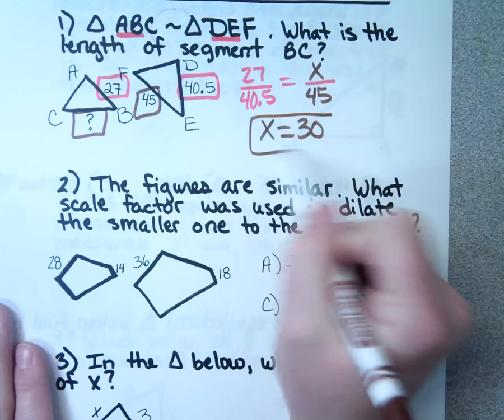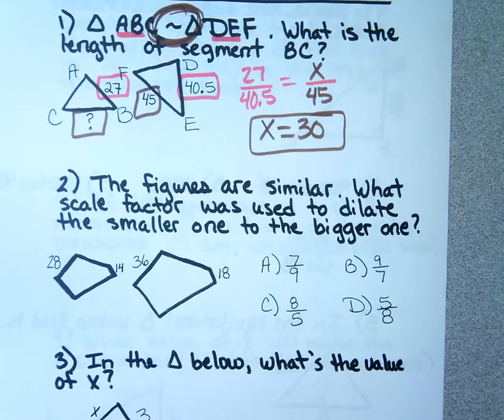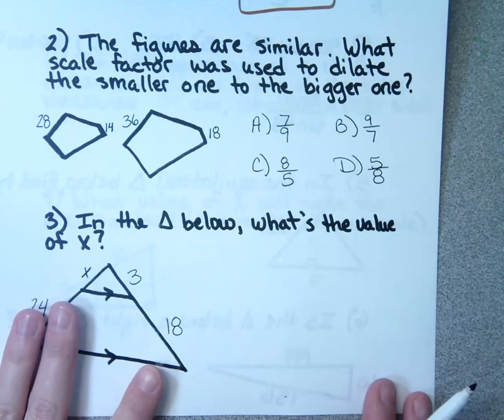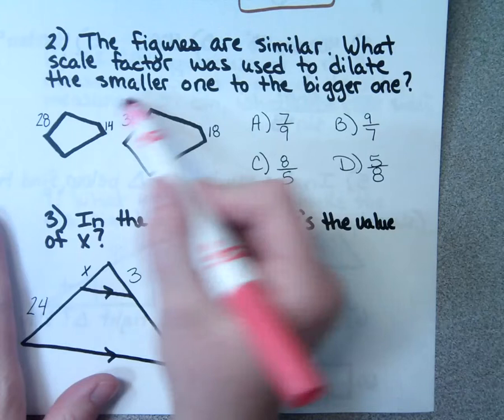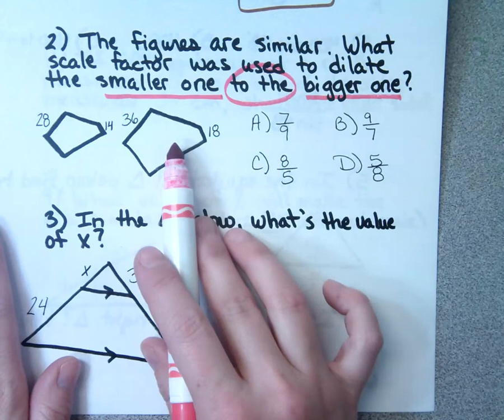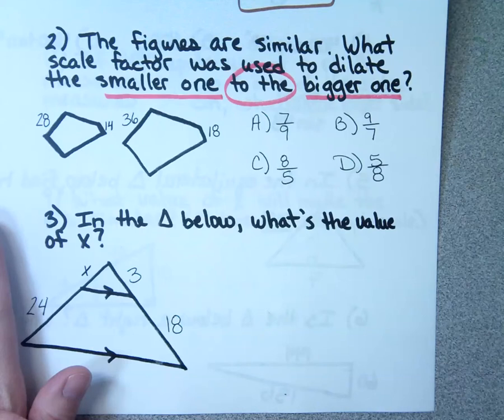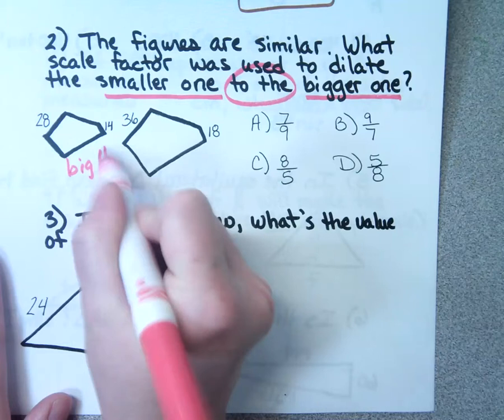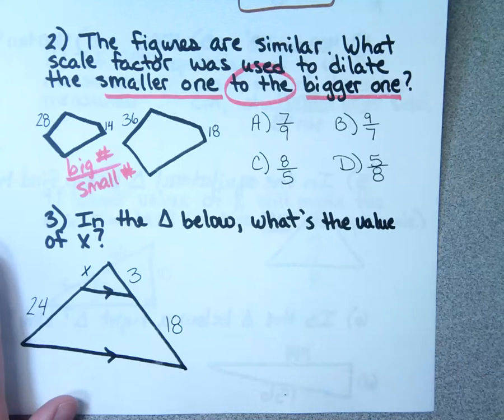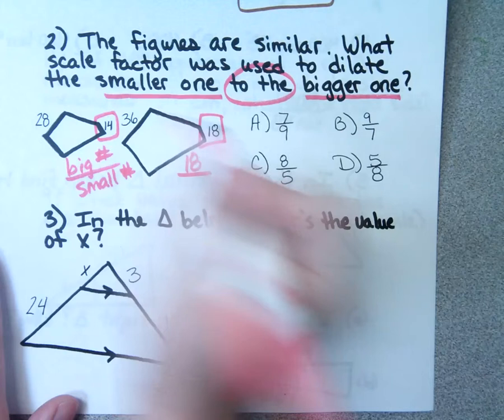Number two. The figures are similar, and it wants to know what scale factor was used to dilate the smaller one to the bigger one. If I want to know the scale factor going from small to big, I want the big number on top and the small number on bottom. So I go to the big picture and pick the 18, compare it to the 14. What can you reduce that to? Nine sevenths. Which is answer choice B.